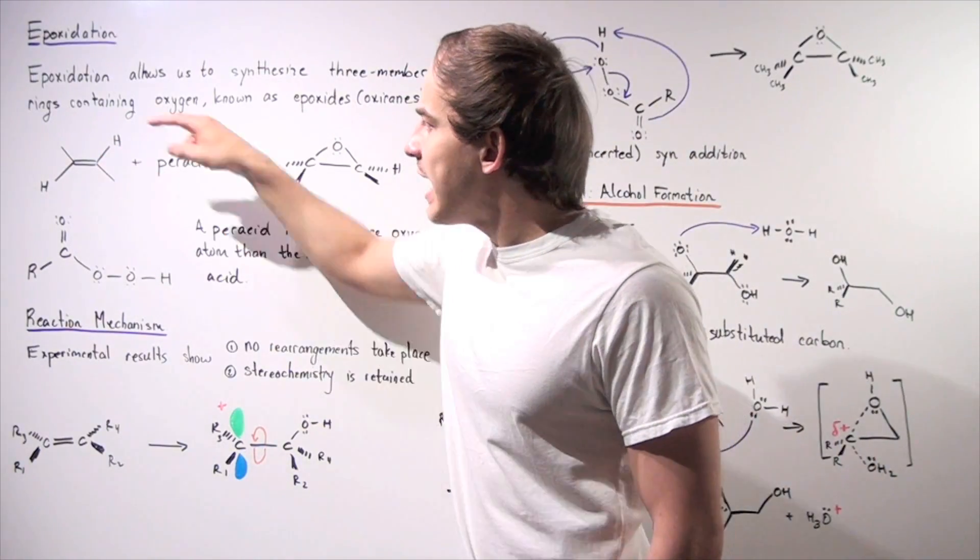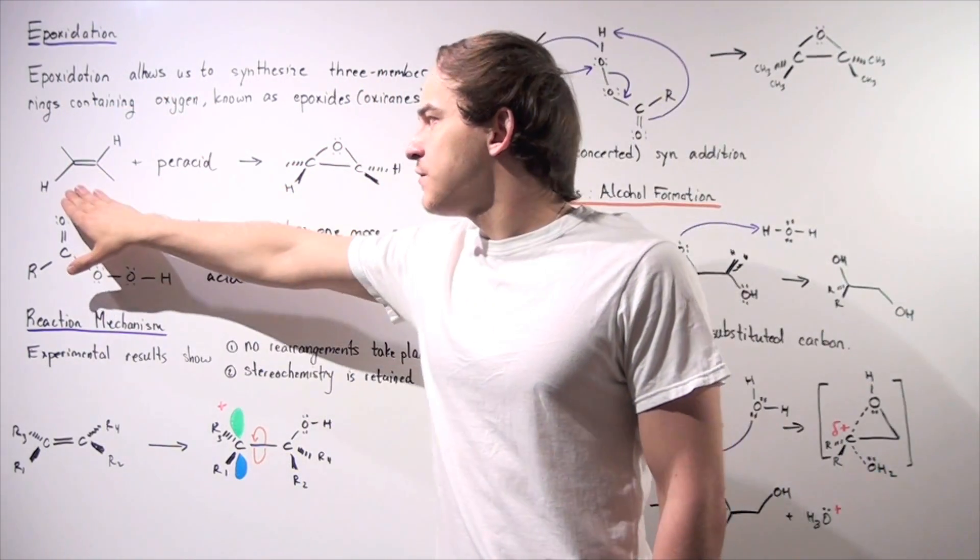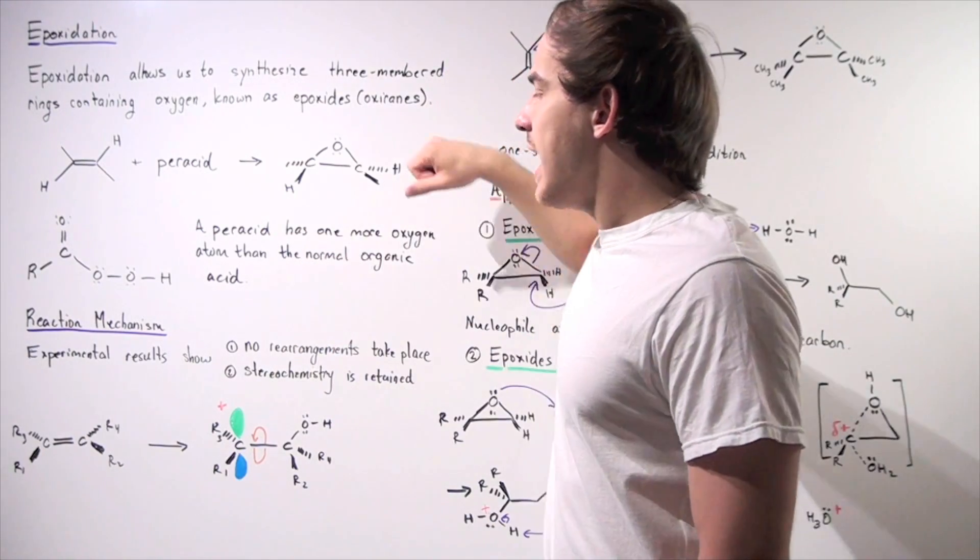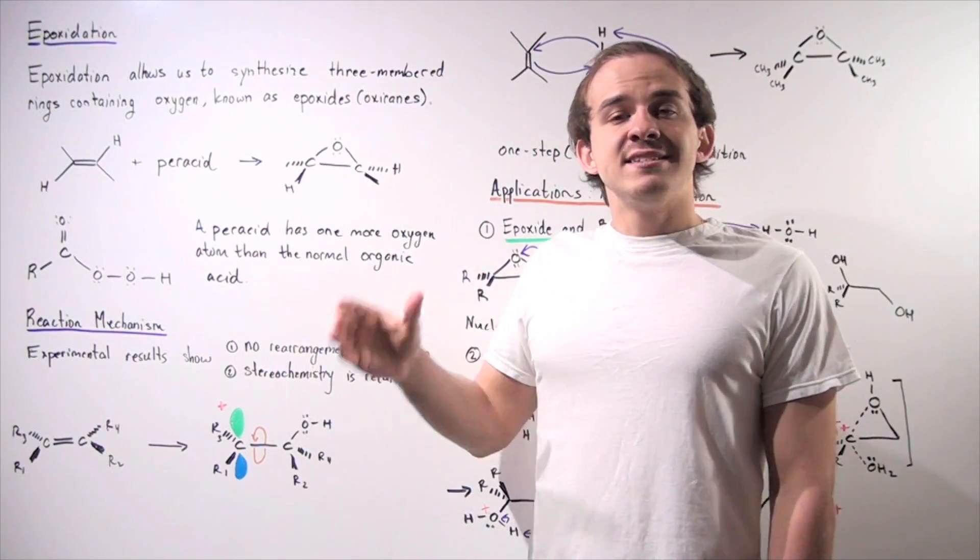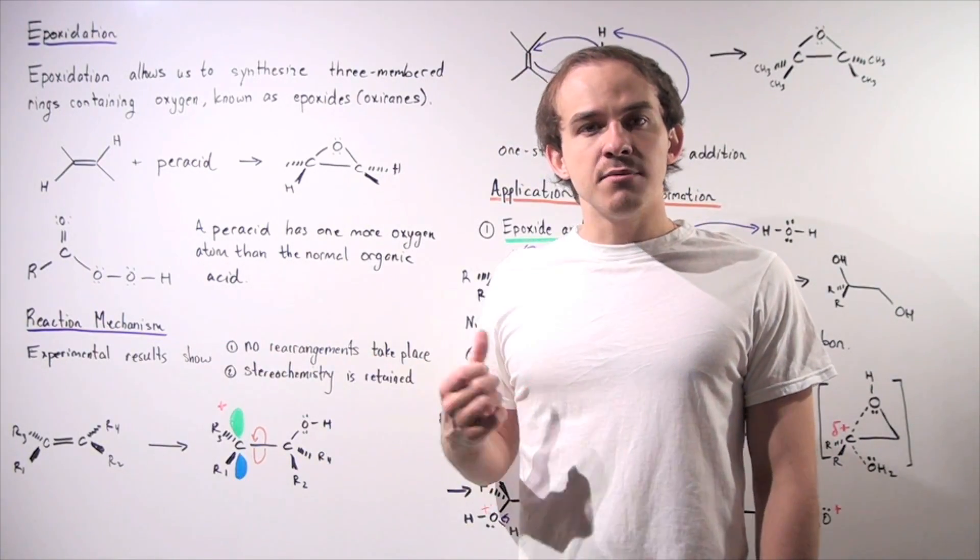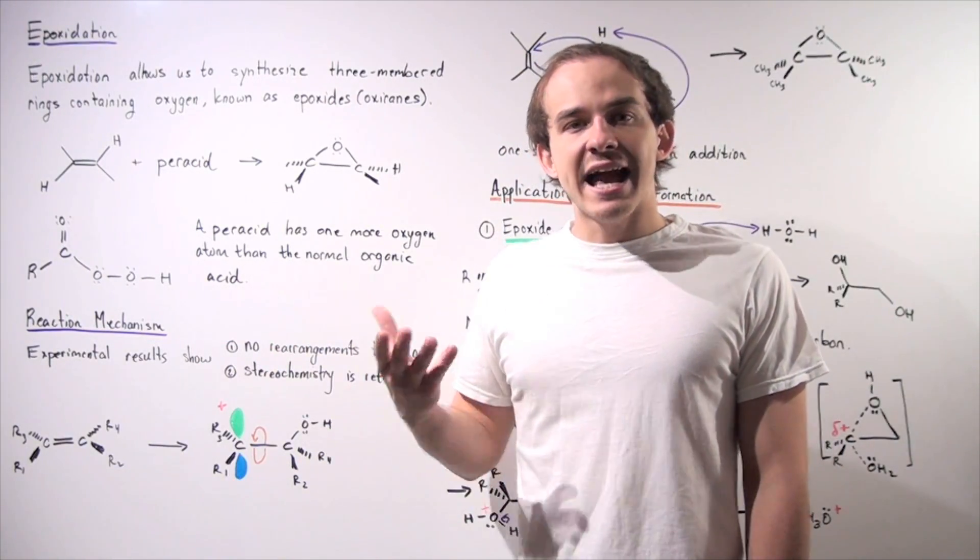In this case, we have a four-carbon alkene, specifically a trans-alkene, and we have some peracid. Now a peracid simply has one more oxygen atom than a normal organic acid.